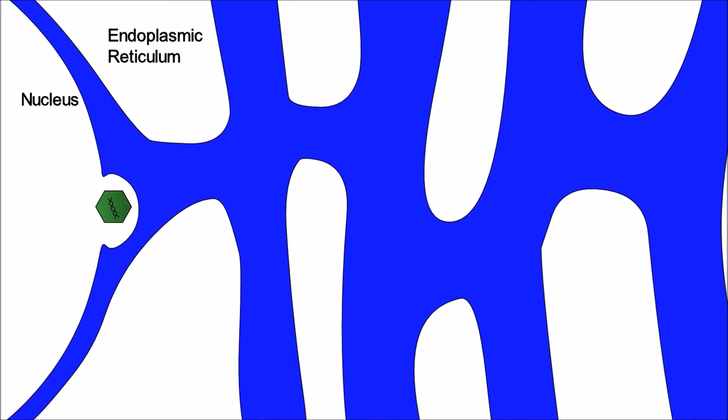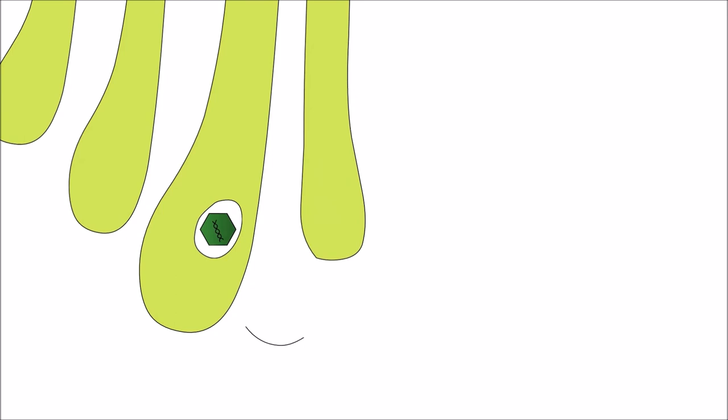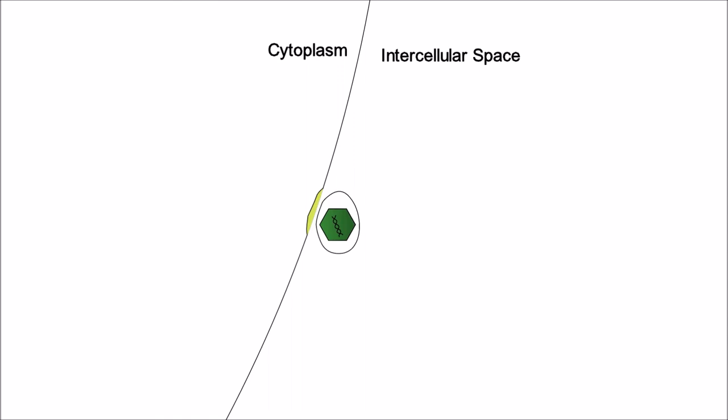Now the capsid buds into the endoplasmic reticulum and moves towards the Golgi body. It buds out of the endoplasmic reticulum and then buds into the Golgi body where it gains its envelope. It moves then across the Golgi body, buds out of the Golgi body and then buds out of the plasma membrane.